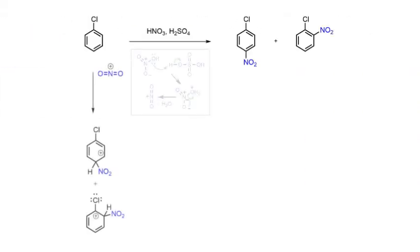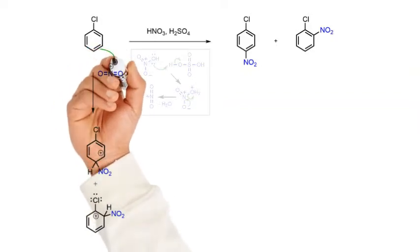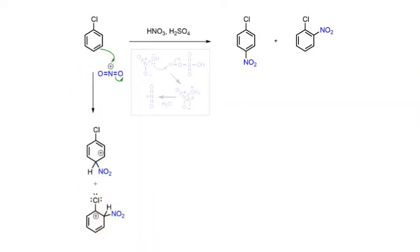The rate determining step in the process is then the chlorobenzene pi-cloud attacking the electrophilic nitronium ion to give two isomeric carbocations in which the nitro group has added preferably to the para and ortho positions.